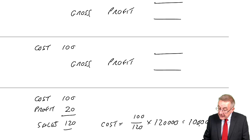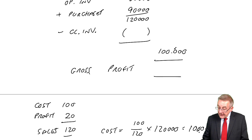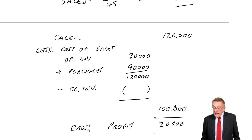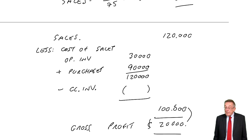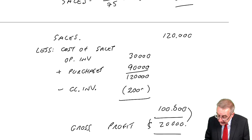If the cost was 100,000, the profit, 20,000. It does work, does it not? Because the markup, the profit, is 20% of the cost. And then, what should the closing inventory have been? If there hadn't have been a fire, the closing inventory would have been the missing figure of 20,000.